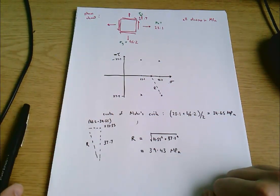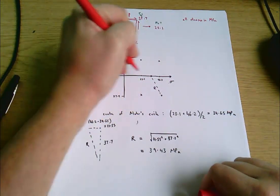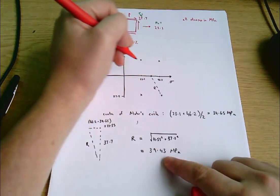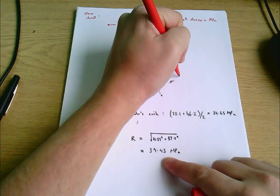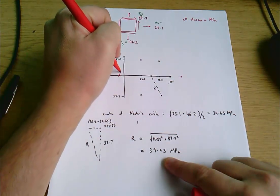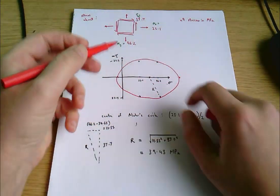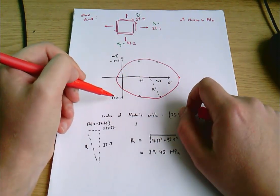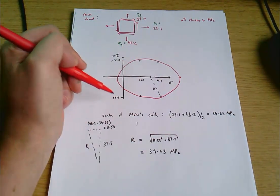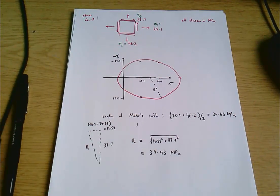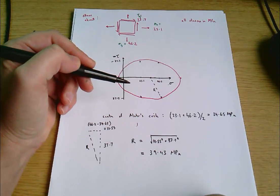We can mark where the circle crosses the normal stress axis. The circle won't look perfect because I haven't scaled the axes appropriately — if the axes were scaled the same it would be a circle. The point here isn't to actually measure anything off the circle; the circle is just to help us visualize what's going on.